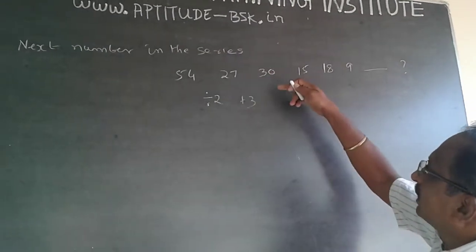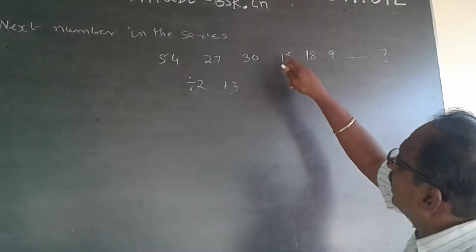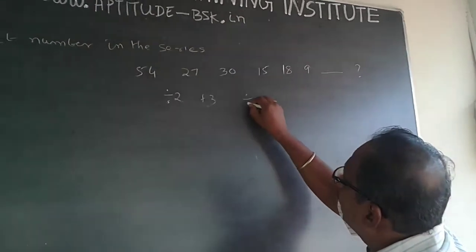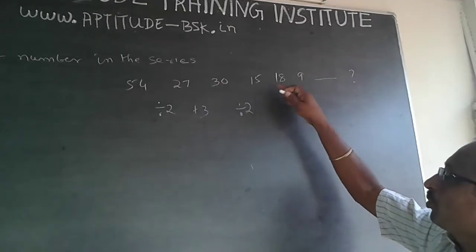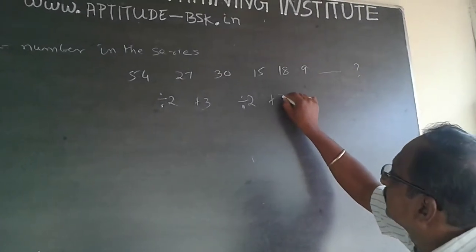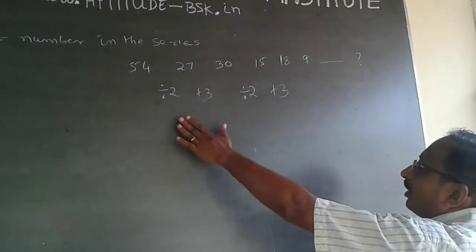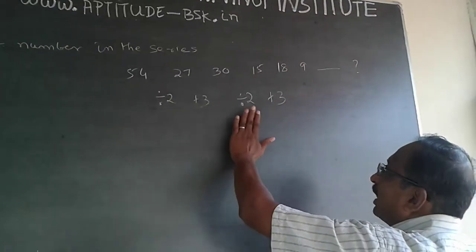54, 27. Then, 30 is plus 3. Then, divided by 2 is a pattern. Divide by 2 will be 15. Divide by 2 is 15 plus 3. So, this is definitely following a pattern. Divide by 2 plus 3. Divide by 2 plus 3.